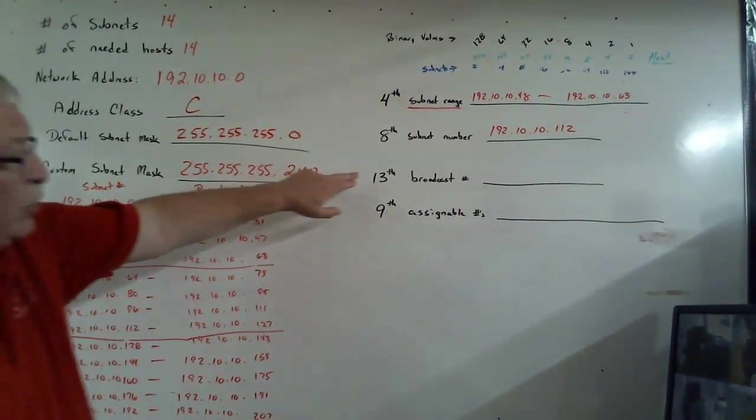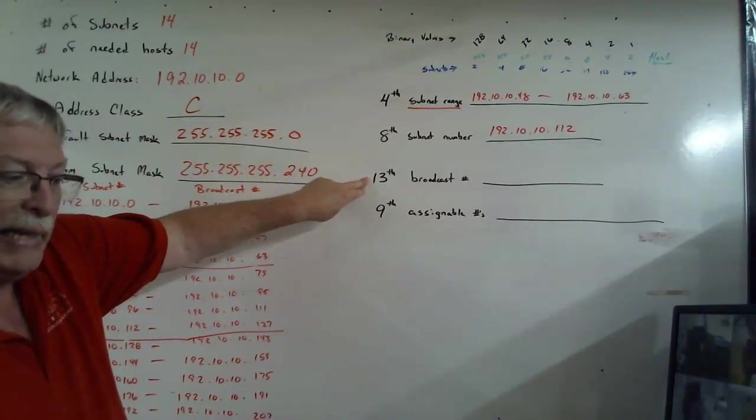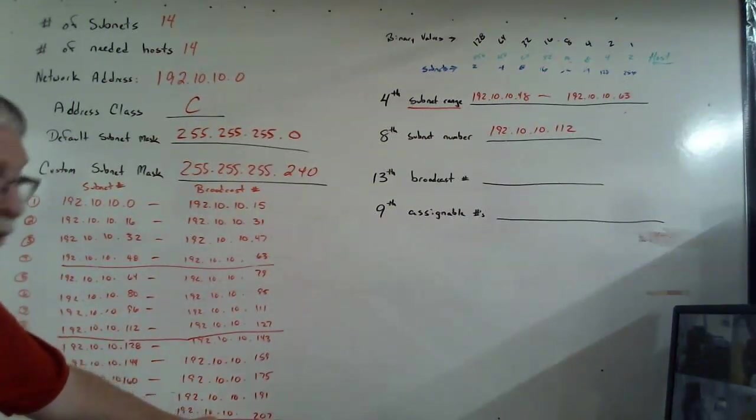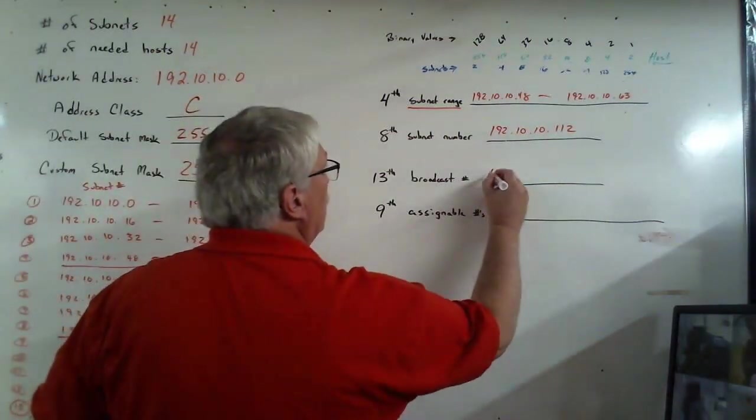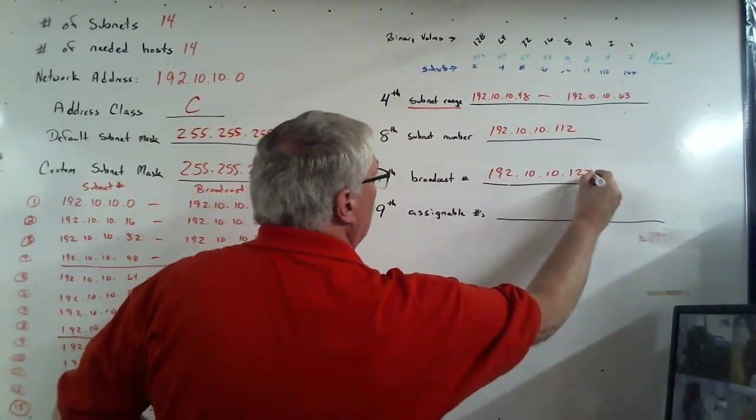The next one wants to know the broadcast or the last number in the 13th range. So again, I find the 13th. It happens to be the last one that I put up just because I was running out of space. The very last number is 207. So therefore, 192.10.10.127.